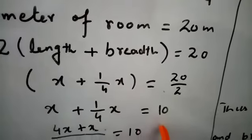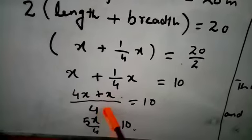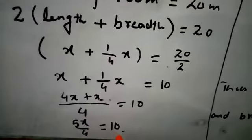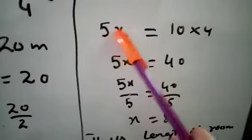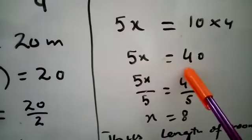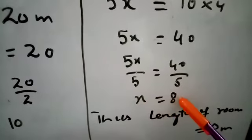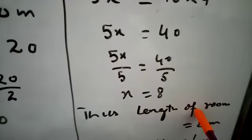Taking LCM, we have (4X plus X) by 4 equals 10, which gives 5X by 4 equals 10. Now by cross multiplication, 5X equals 10 into 4, 5X equals 40. Dividing both sides by 5, X equals 8. Thus length of room, which was X, gives 8 meters.